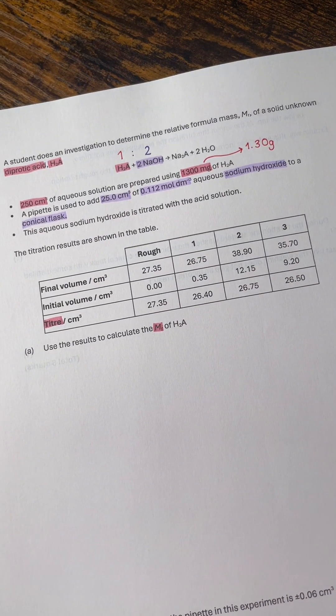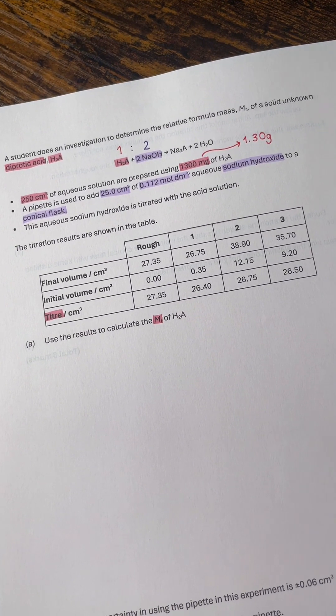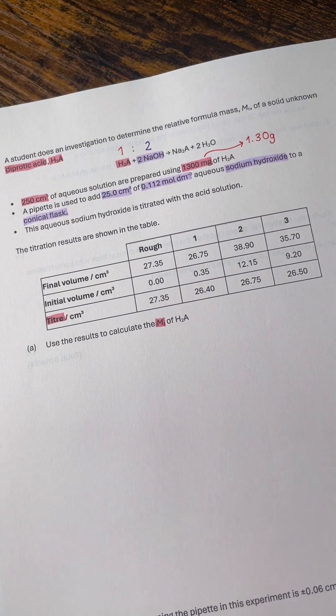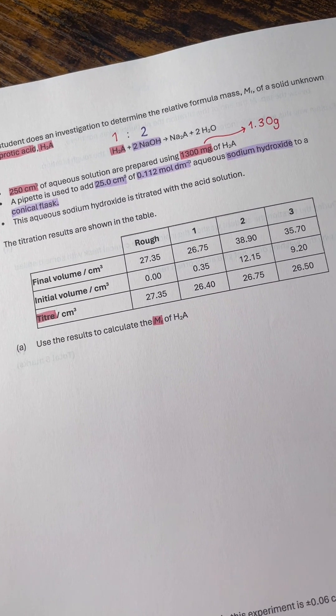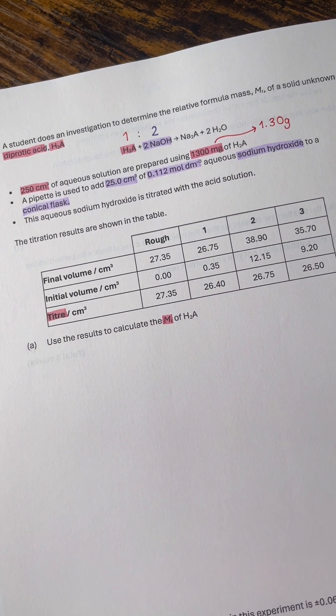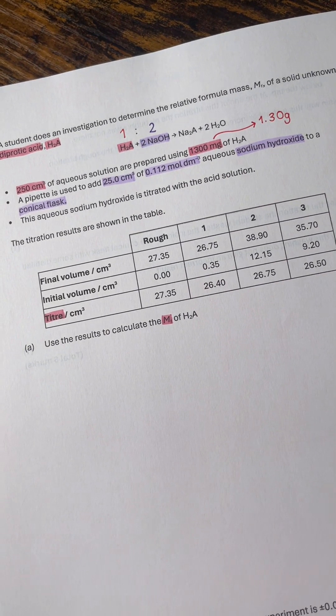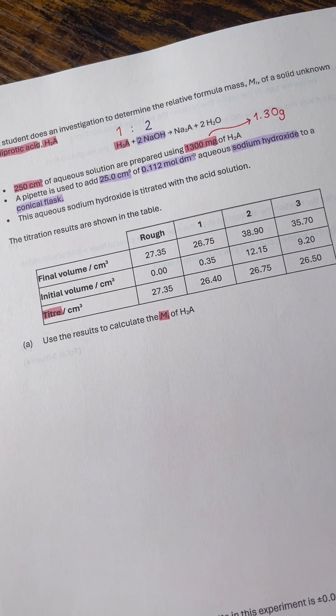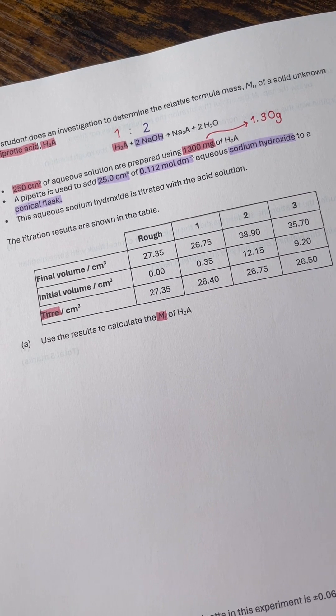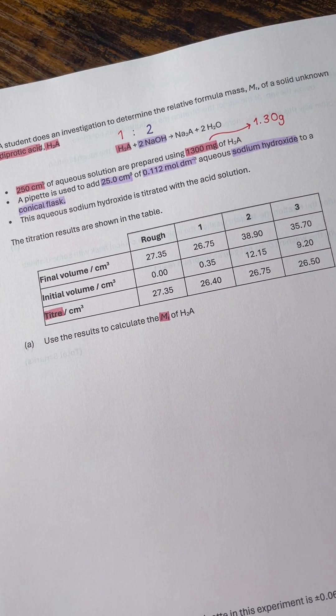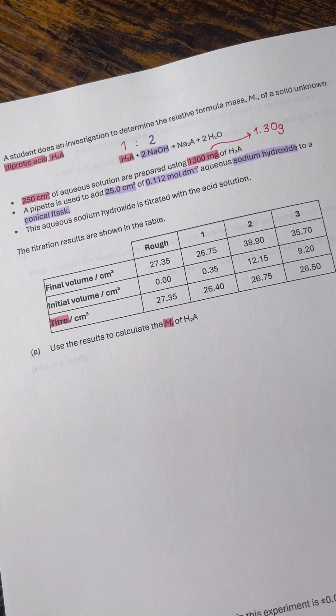As well as doing my highlighting, I've also annotated a couple of things. I've made a point of recognizing that the diprotic acid and the sodium hydroxide are going to react in a 1 to 2 molar ratio, and I've also converted the mass of H2A that was added to the 250 cm³ of aqueous solution from milligrams into grams, which is 1.309 grams, because that is the standard unit for mass that we're going to need to use to work out the MR a little bit later.